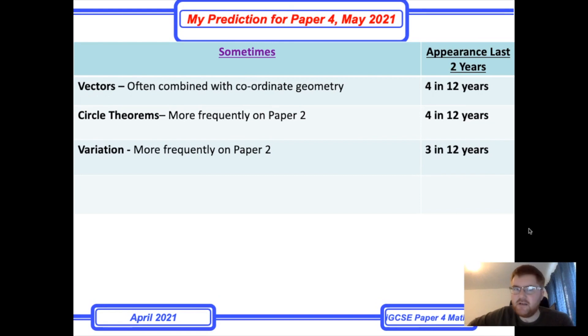And the sometimes category - vectors hasn't been a particularly popular big topic in the last couple of years, maybe it will make a comeback this year. Often combined with coordinate geometry, which generally sticks to paper two. And I've mentioned circle theorems and variation, they've both been far more common on paper two. But if you do your paper two and find either these topics are not on your paper two, then the probability increases that they're going to be on your paper four instead.